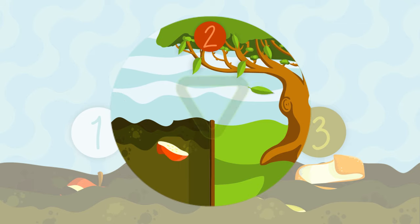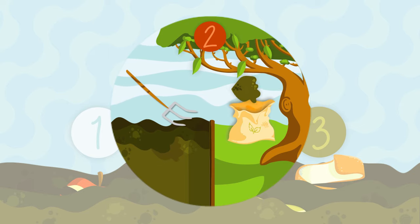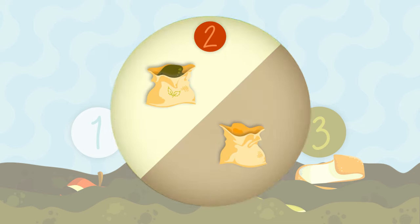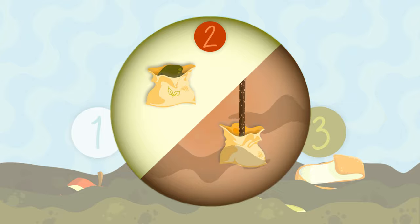Second, composting mimics natural nutrient recycling processes, breaking down biodegradable materials to produce organic fertilizer, a sustainable alternative to synthetic fertilizers that require high amounts of fossil fuel energy to produce.